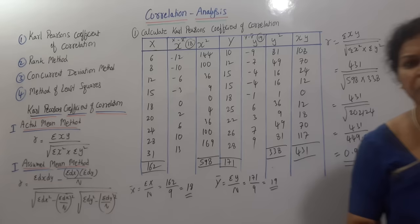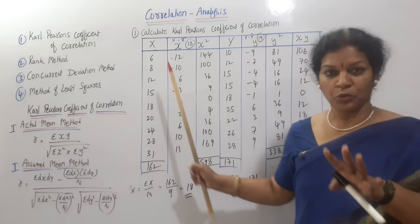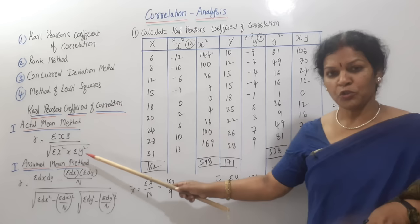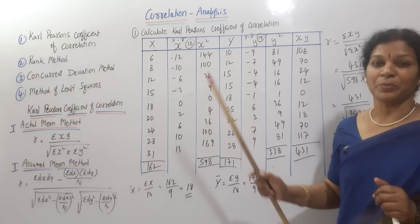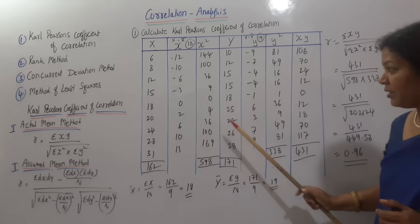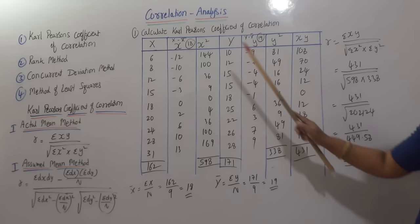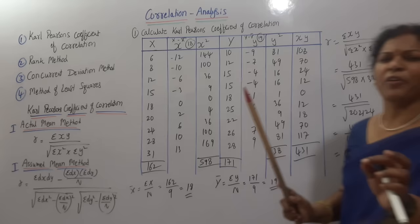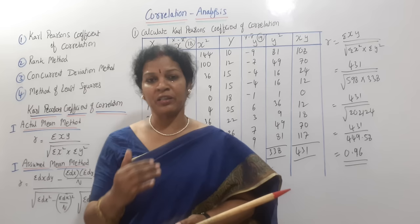Shall I give you a recap? Carl Pearson's coefficient of correlation has two methods: actual mean or assume mean. We have seen the actual mean method today. The formula is simple. Open the required columns — small x, x-squared, small y, y-squared, and x into y. Get small x as x minus x̄, small y as y minus y̅, then apply the formula. In the exam, if they do not ask you to follow the assume mean method, it is better to go for this actual mean method — the formula is easy and calculation is also easy. Stay connected and see you in the next class. Good luck.